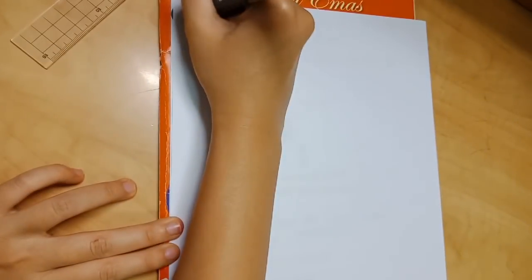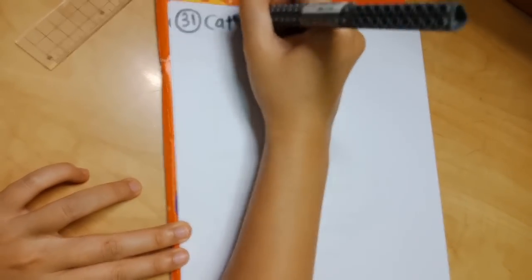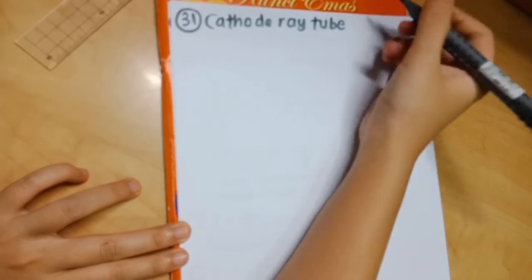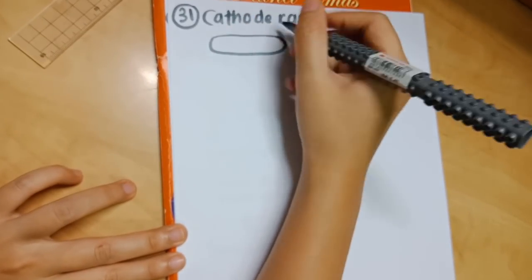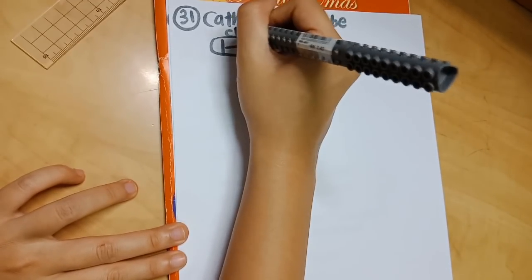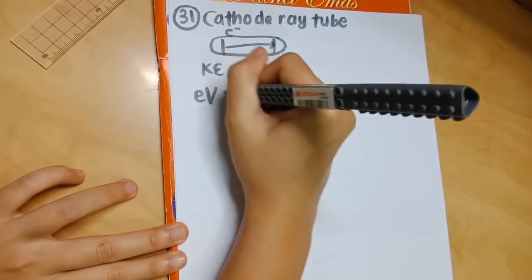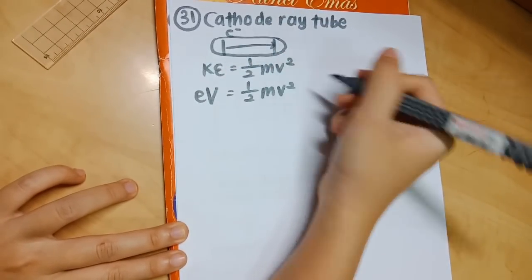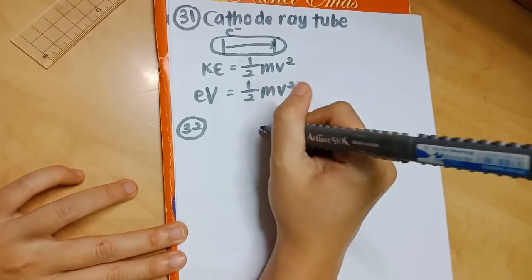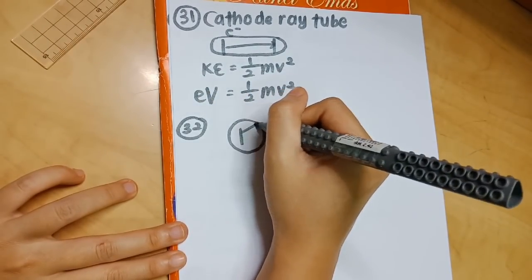Number 31 is a formula for the cathode ray tube where electrons are accelerated across the tube from the negative cathode to positive anode. To calculate the kinetic energy of electrons, we can use the formula 1 over 2 mv squared. From there, we can get a new formula which is eV equals 1 over 2 mv squared.